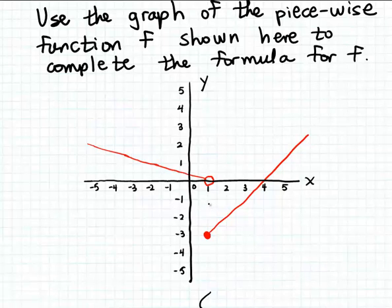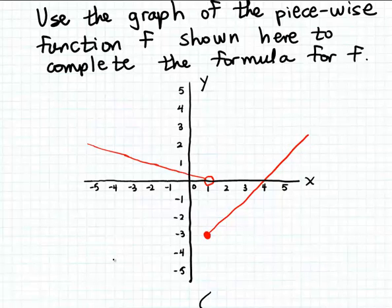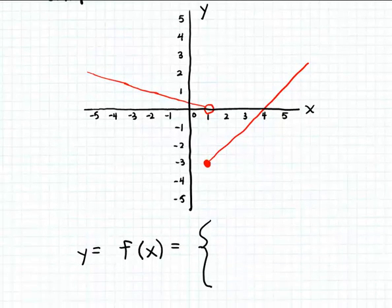In this example we're given the graph of a piecewise linear function and we want to write down the formula for this function. We know this is a piecewise function because the graph consists of two distinct pieces, and both of those pieces are straight lines — that's why it's called a piecewise linear function. So the formula for this piecewise linear function is also going to consist of two pieces.